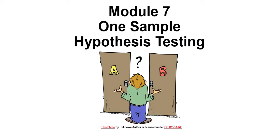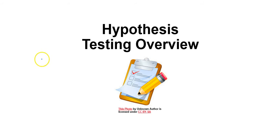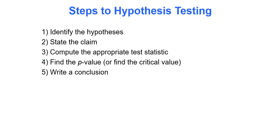We are on to Module 7 now, which is discussing one-sample hypothesis testing. Our first stop is an introduction or overview of what a hypothesis test actually is. When performing a hypothesis test, you identify the hypotheses and mark which one is your claim, compute the appropriate test statistic, find the p-value or critical value, and then write a conclusion. These are the steps we'll be going through one by one.